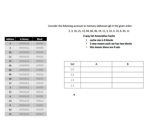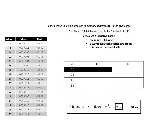When a block maps to a set, it can go into either column A or column B — it doesn't matter which, as long as space is available. We start by accessing address 2, which is block 0000. Because we have four sets, we need two bits to identify the index, since 2² = 4. We look at the last two bits of the block ID to determine the set. The cache is empty, so this is a miss, but space is available, so we move the block in.